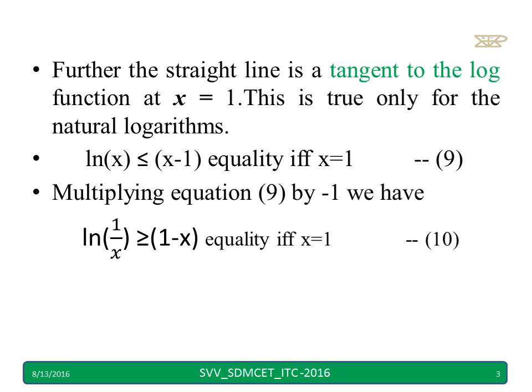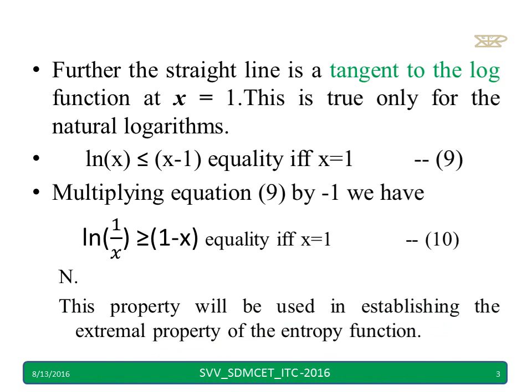Multiply equation 9 by minus 1. We will get ln of 1 by x is greater than or equal to 1 minus x. This particular property we use when you are establishing the extremal property of the entropy function.